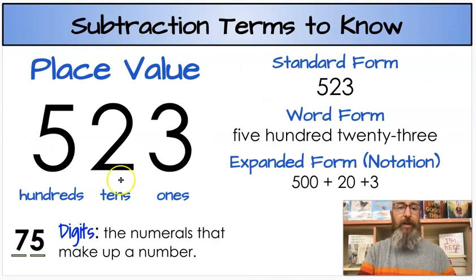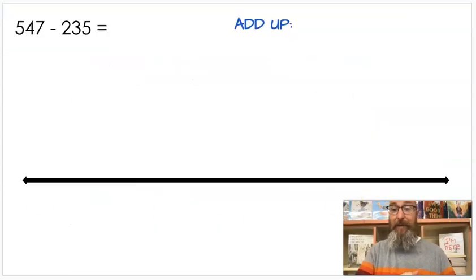We also have place value. We have a number here, 523. It's a three-digit number made up of three numerals. In a number we have the place value. We have three ones which tells us there's three ones, two tens which makes 20, five hundreds which makes 500. So we have the number 523. If I broke it up into expanded form or expanded notation, it'd be 500 plus 20 plus 3.